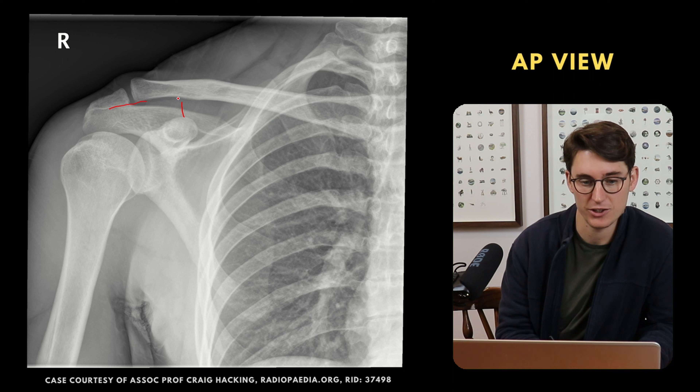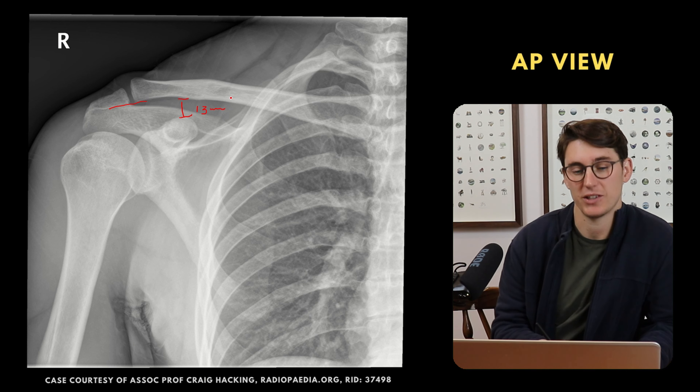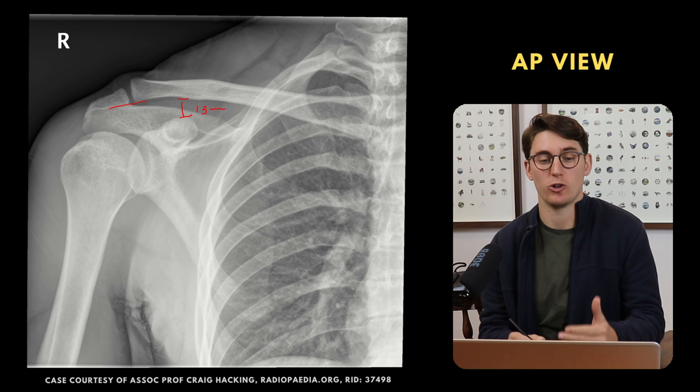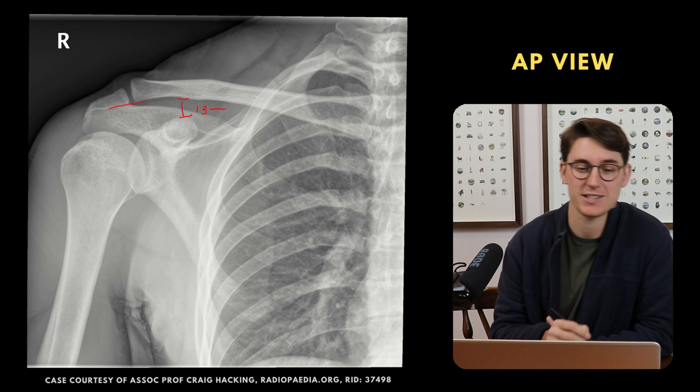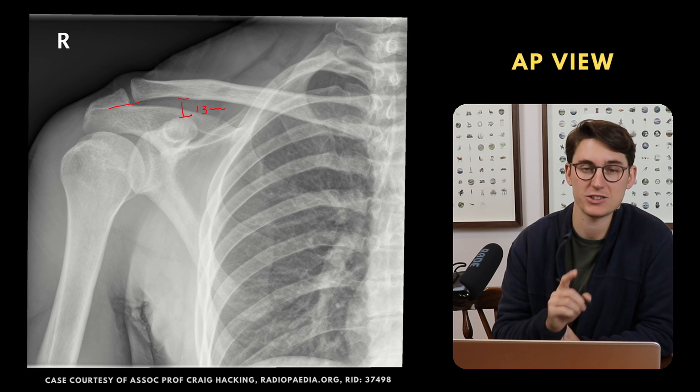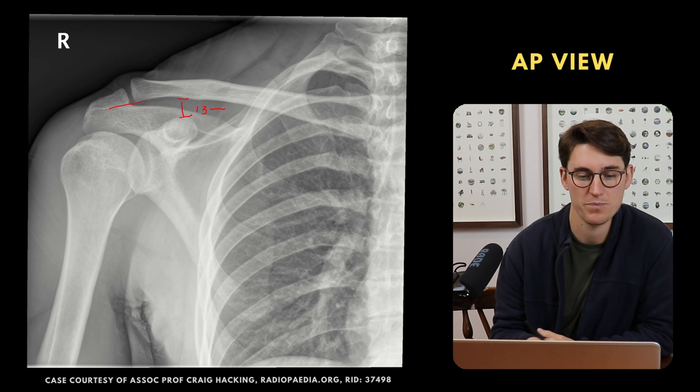The second question is: is the coracoclavicular joint more than 13 millimeters? If it is, that's abnormal. Here it's less than 13 millimeters, so that's normal.